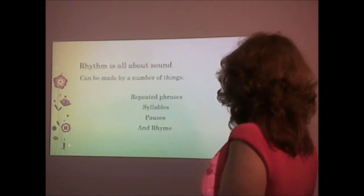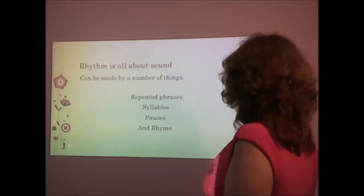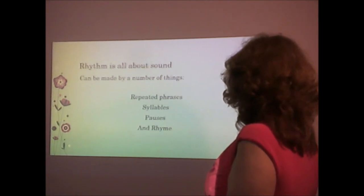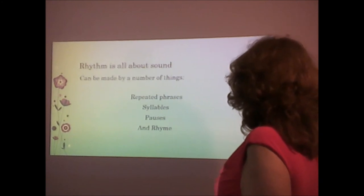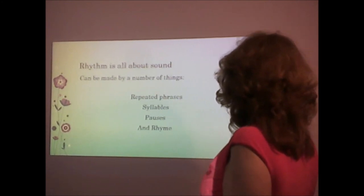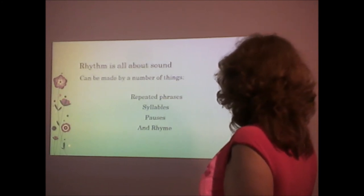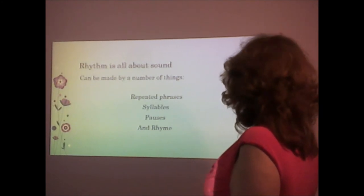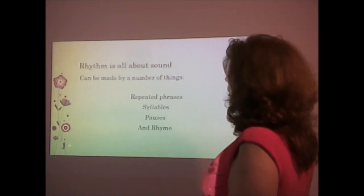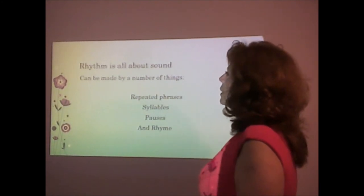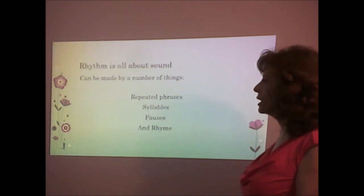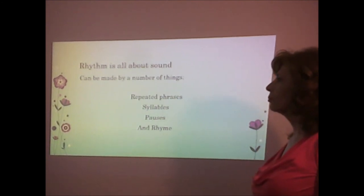You can create rhythm by rhyming words, by using repetition, or by changing the length of the line. You may have a short line followed by a long line, or long line, long line, then short, short line. It creates a type of rhythm and patterns that the brain can follow. Rhythm is all about sound. It can be made by a number of things: repeated phrases, syllables, pauses, and rhyme.